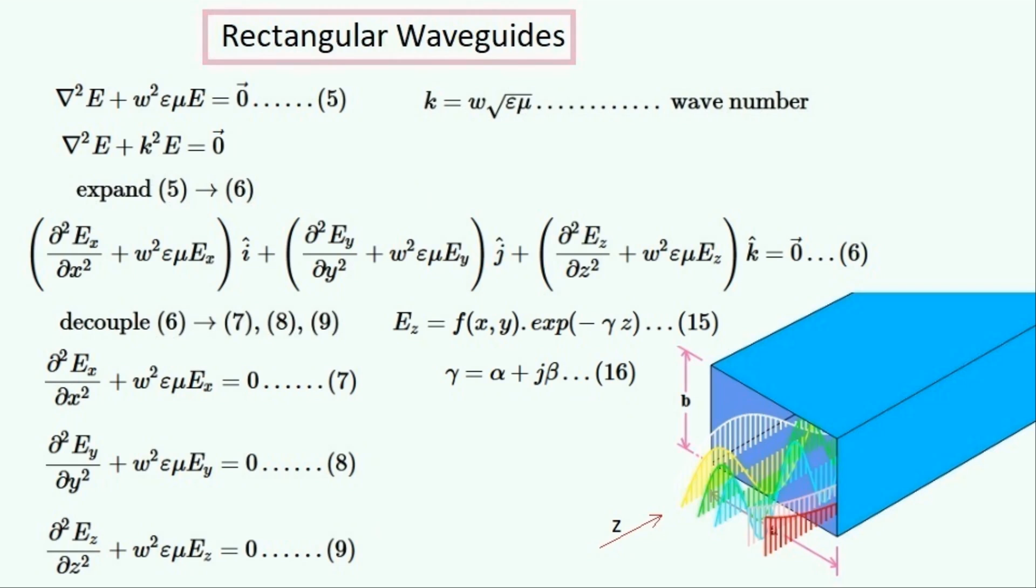So this is what γ looks like as a complex number. α is the attenuation and is positive, and β is the phase constant. α and β can't both be non-zero at the same time, which we'll find out later.